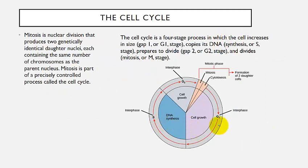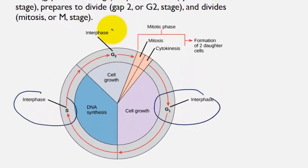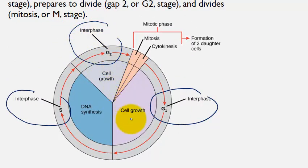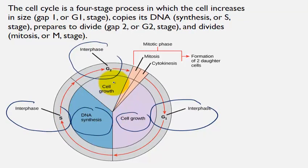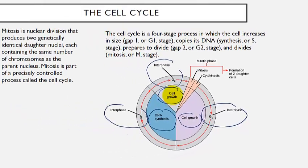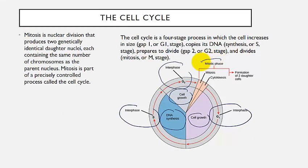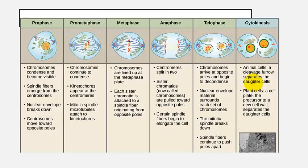To summarize: G1 is interphase and involves cell growth; S phase is interphase and involves DNA synthesis; G2 is interphase and involves cell growth again. If everything is in order, the cell enters the mitotic phase and forms two daughter cells.